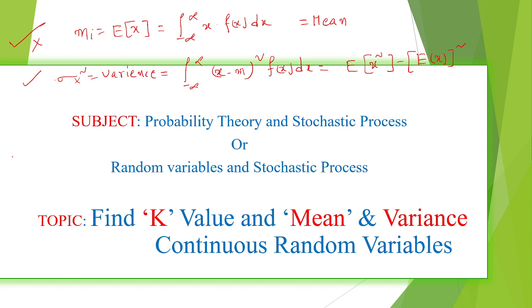For example, the average of 2, 3, 4 is (2+3+4)/3 = 9/3 = 3. This is in real numbers, but for random variables, we calculate the average following this format. This is the first average and this is the second average. We will go with one example.